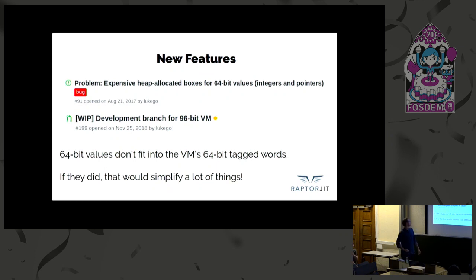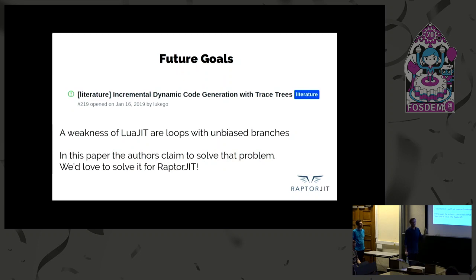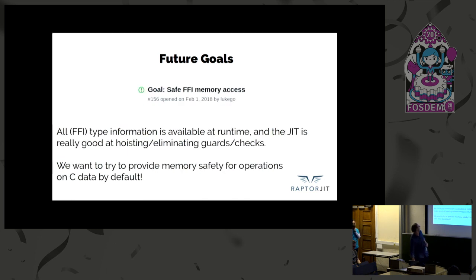There's also something that LuaVela has apparently already implemented that we're really interested in because it removes another high-impact medium-generality optimization — check out the slides if you want to know more about that. In general, there's new literature and new science happening around JIT compilers that really fixes some basic things, and we're open to experimenting with that. One of my personal goals would be to have safe foreign function memory access, because all the type information for foreign types — meaning C data — is available at runtime, so nothing really stands between us making that type-safe. And the compiler is really good at optimizing those checks.